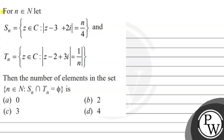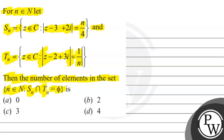Hello, let's see the question. The question says: for n belonging to natural numbers, let S_n = {z ∈ C : |z - (3 + 2i)| = n/4} and T_n = {z ∈ C : |z - (2 + 3i)| = 1/n}. Then the number of elements in the set {n ∈ ℕ : S_n ∩ T_n ≠ ∅} is — option A: 0, option B: 2, option C: 3, option D: 4.